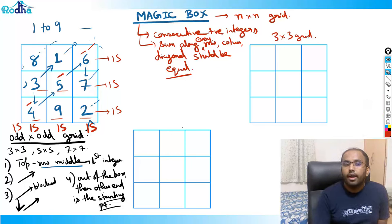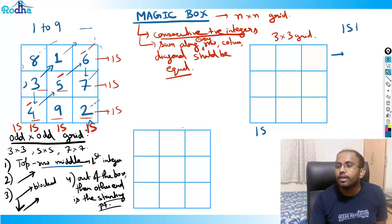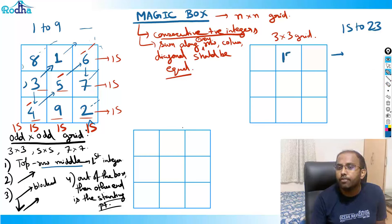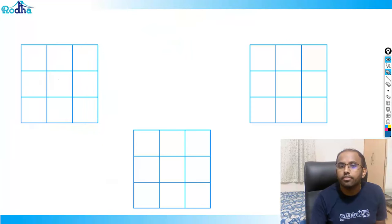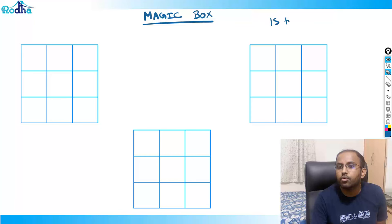Now, the magic box requires consecutive positive integers — so I can also do it for numbers like 15 to 23. Let's create a magic box from 15 to 23.